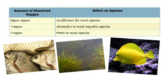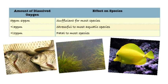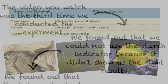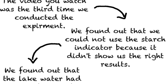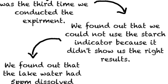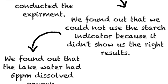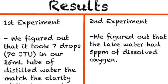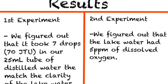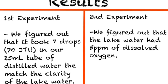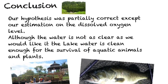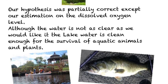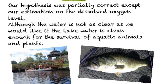This is a table showing how the amount of dissolved oxygen has an effect on species. We had five parts per million, which means it was sufficient for most species. It took us multiple times to conduct the experiment correctly — we found out this was because the starch indicator we were using was out of date, so it wasn't showing the right results. Our hypothesis was partially correct except for our estimation on the dissolved oxygen level. Although the water is not as clear as we would like, the lake water is clean enough for the survival of aquatic animals and plants.